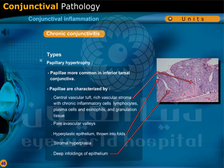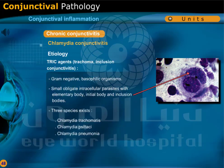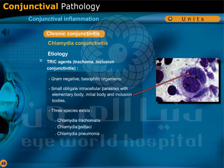Chlamydia conjunctivitis is a chronic conjunctivitis caused by Chlamydia trachomatis, characterized by initial epithelial infection followed by sub-epithelial inflammation with follicle and papillary formation in the substantia propria, and healing by fibrosis. The TRIC agents — trachoma inclusion conjunctivitis — are gram-negative basophilic organisms, small obligate intracellular parasites with elementary body, initial body, and inclusion bodies. Three species exist: Chlamydia trachomatis, Chlamydia psittaci, and Chlamydia pneumoniae.